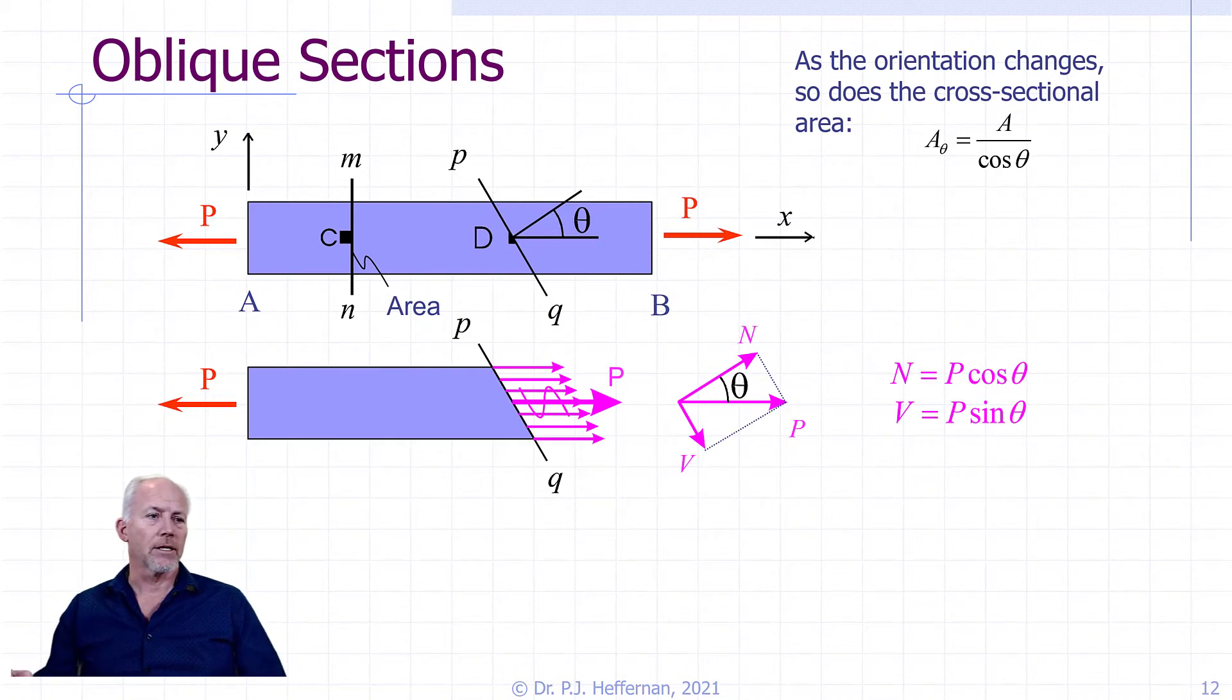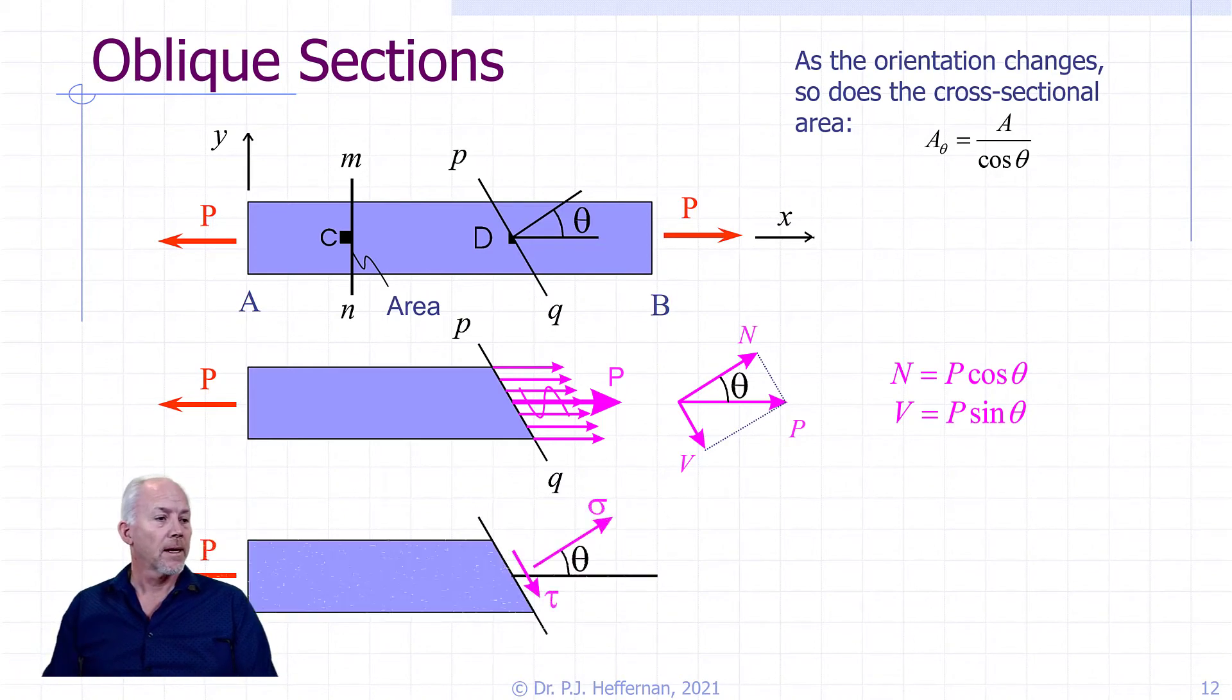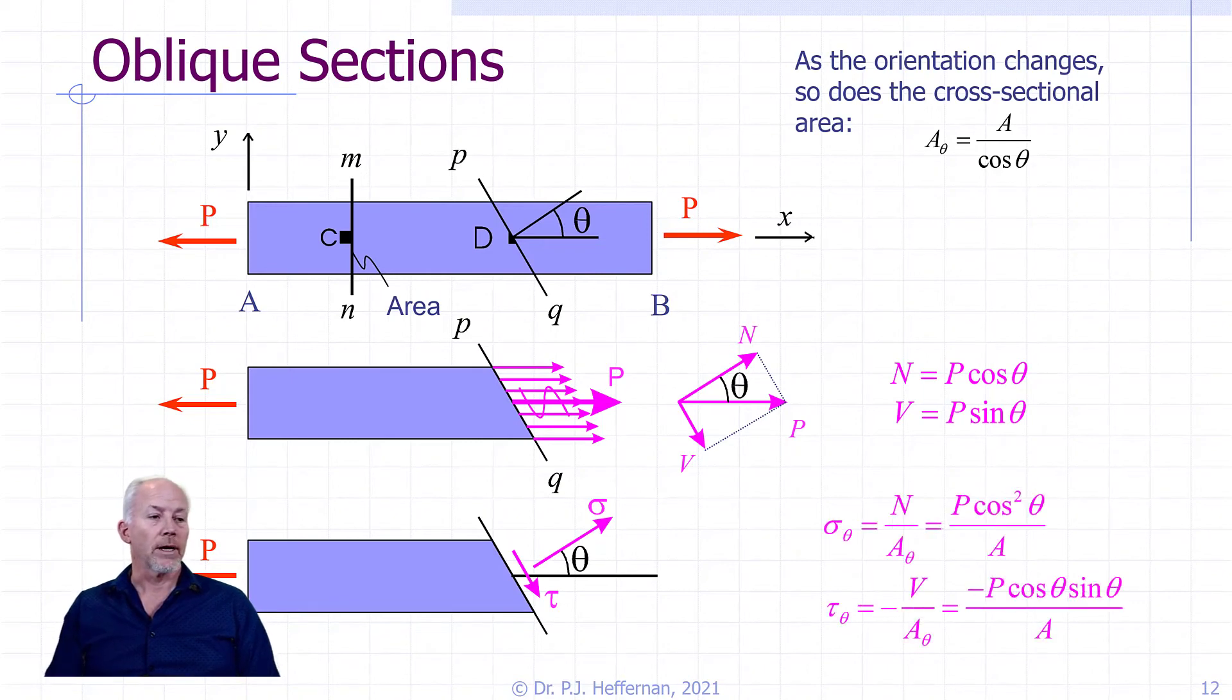So now we can take these and figure out what our normal stresses and shear stresses are on this oblique plane caused by this uniaxial force p. We have our orientation, we know that we're going to have a normal stress, we know that we're going to have a shear stress because we have a normal force N and a shear force V. We can calculate those by dividing through by our new area, A sub theta, and we get these two relationships, one for sigma theta and one for tau theta.